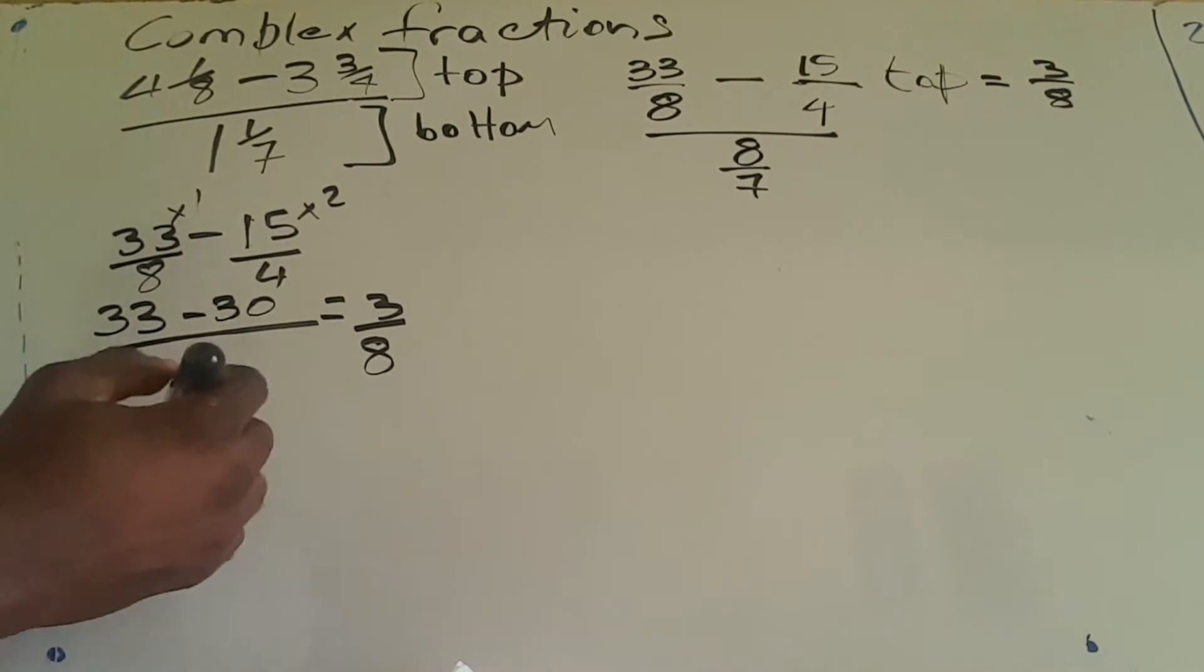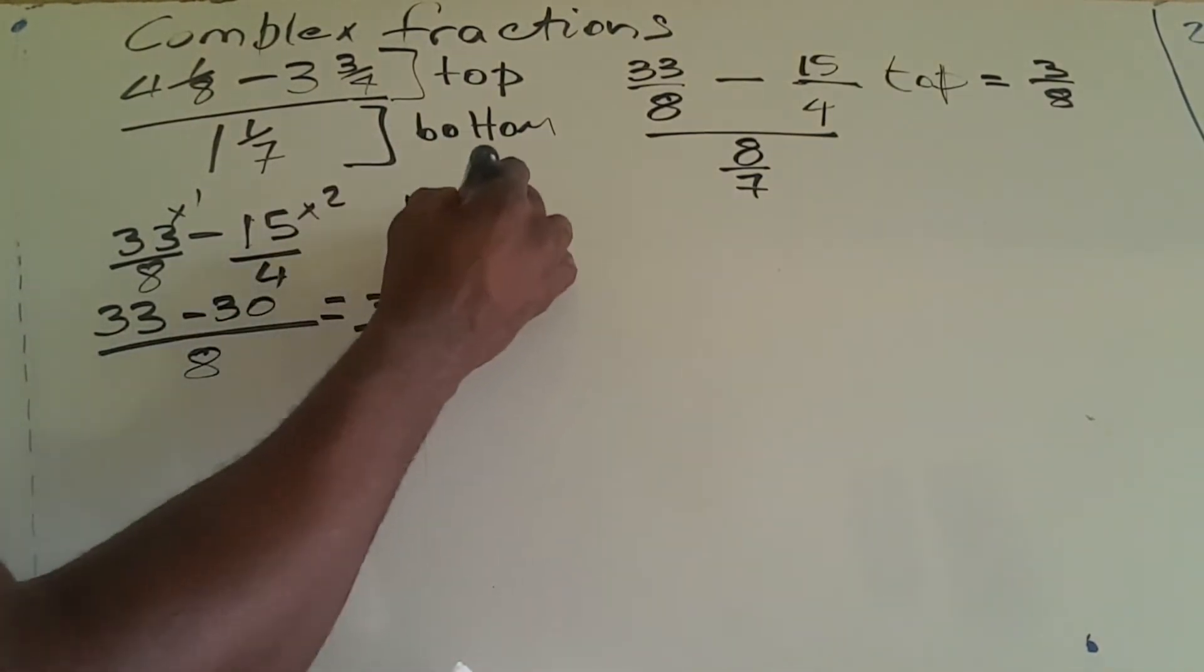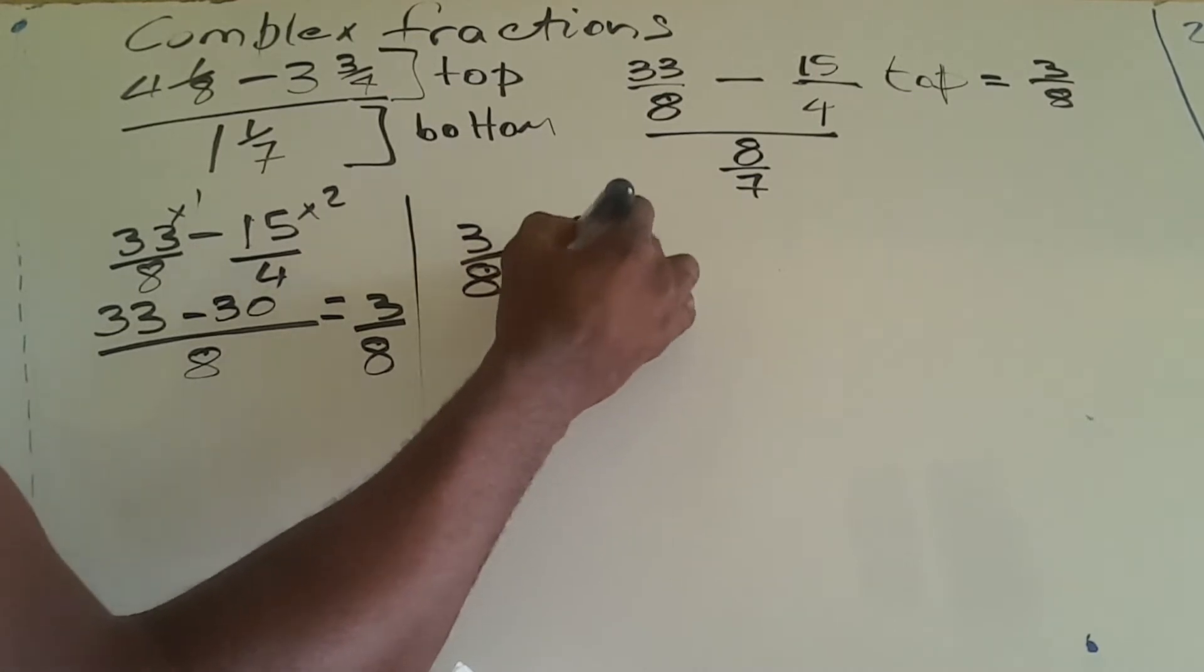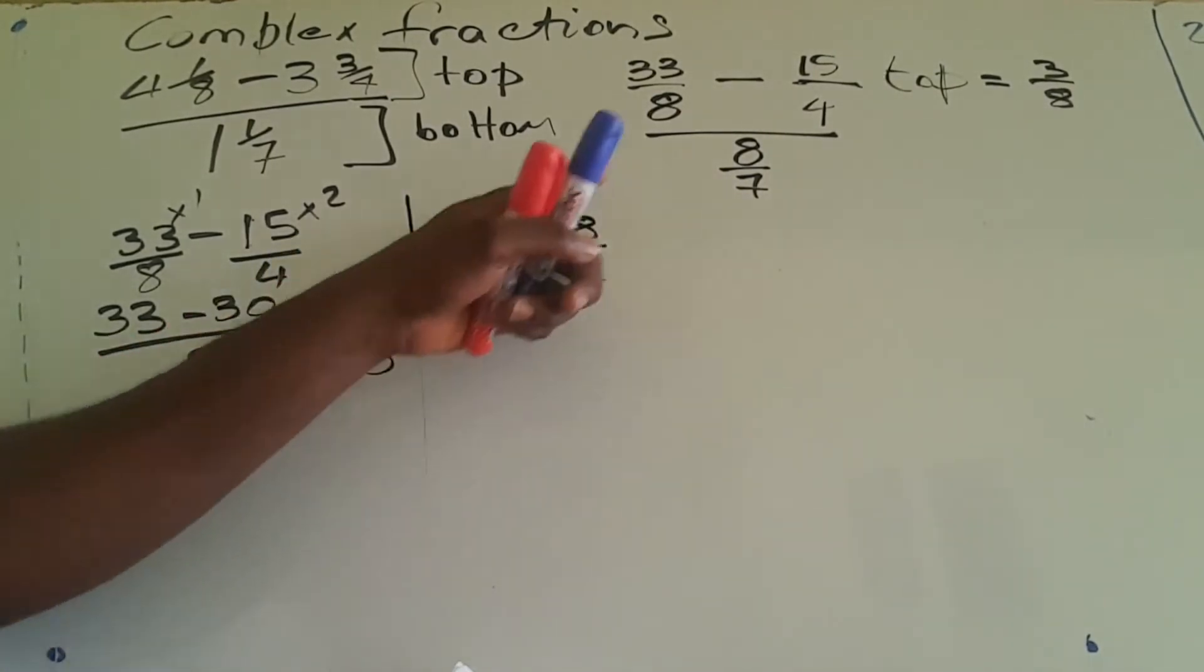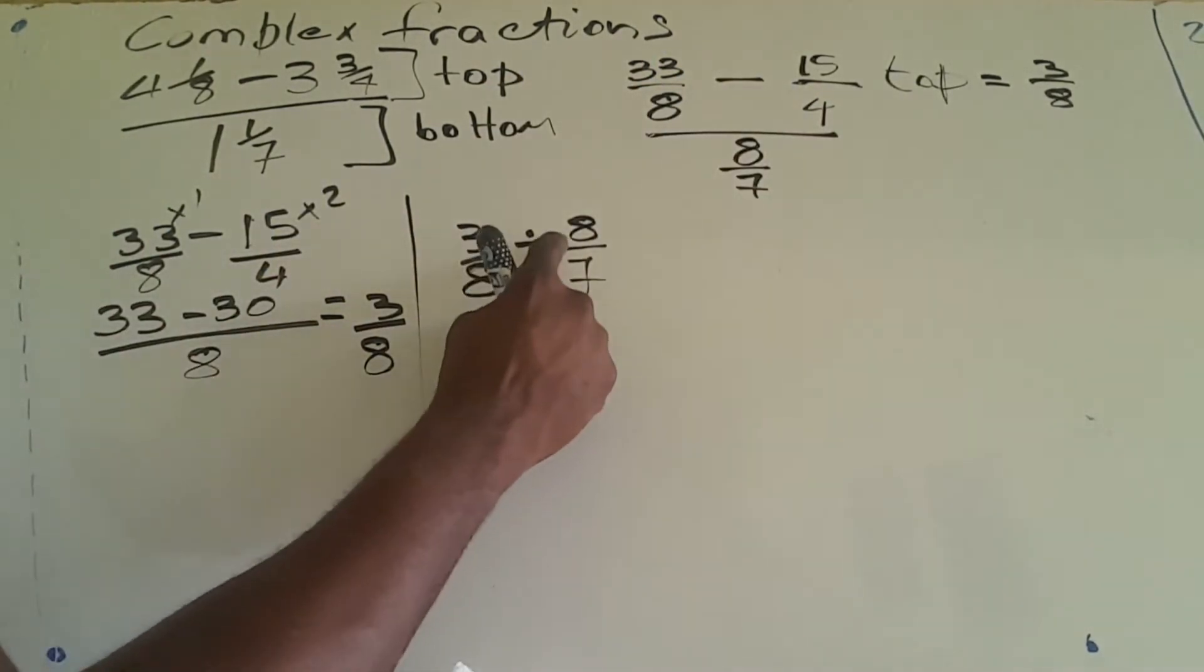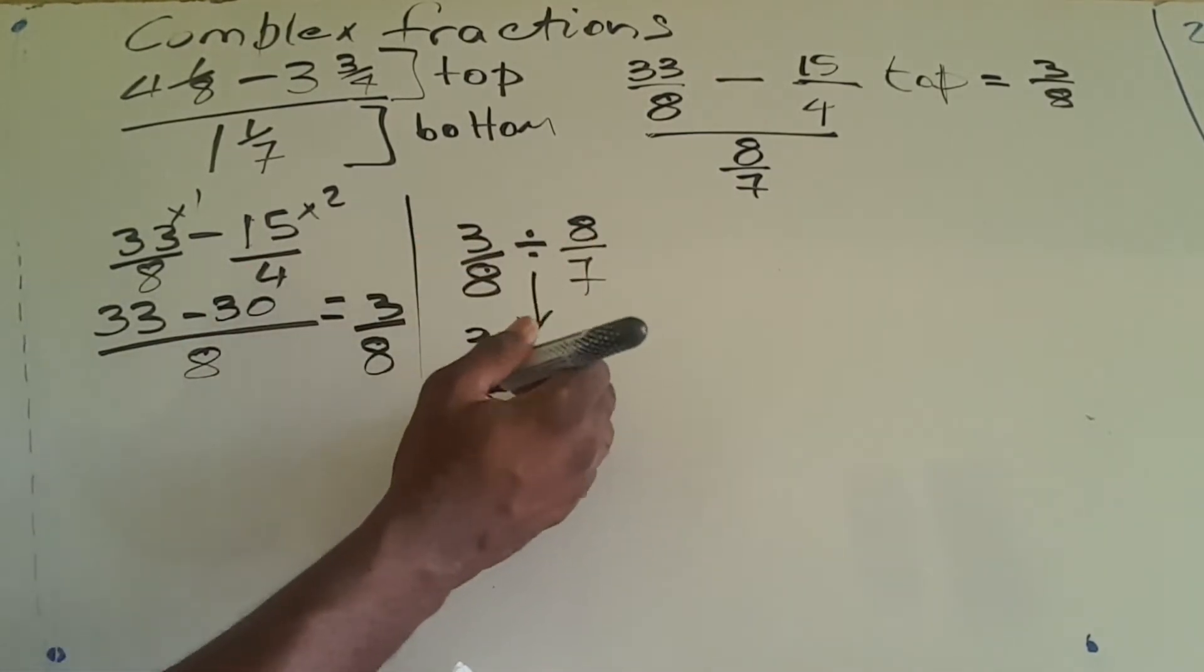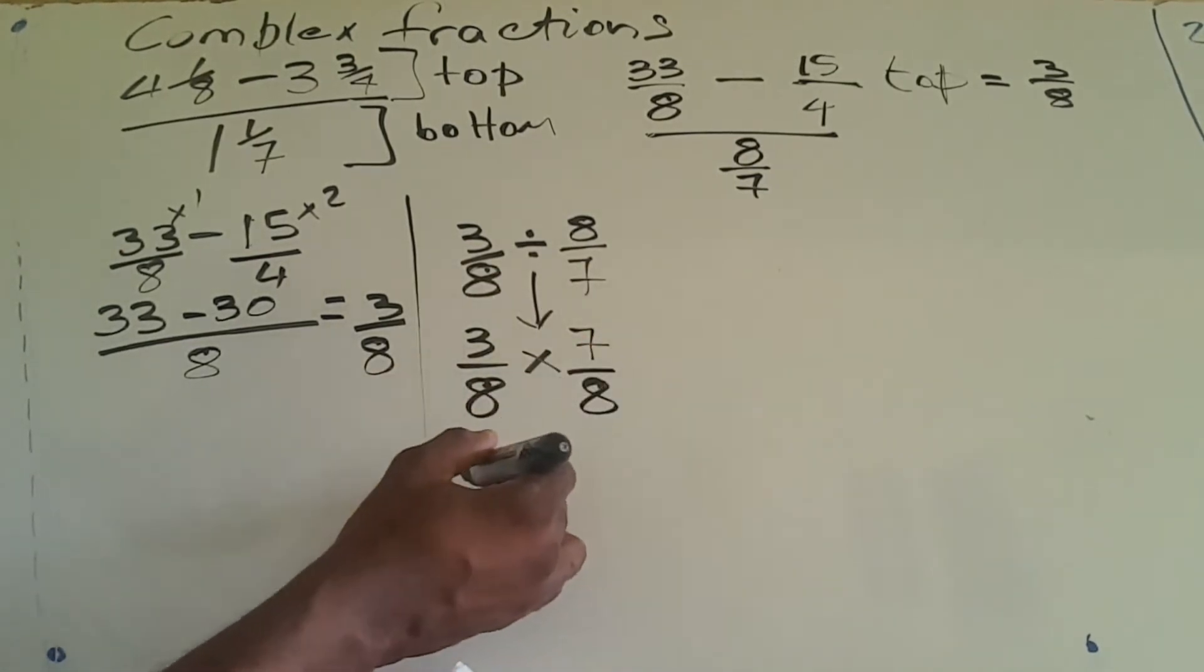What we have basically is 3/8 divided by 8/7. We could look at this long stroke as division, so divided by 8/7. We normally change this to multiplication and reciprocate the fraction that comes after, so it's going to be times 7/8.